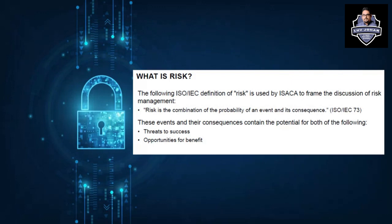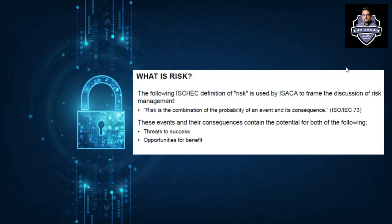Coming back to the definition: risk is the combination of probability and its consequences. Probability is the likelihood of occurrence of a risk, and consequence is the impact — reputational impact, business impact, financial impact, operational impact. I hope this gives you a clear and precise definition of risk. Please make sure you understand this, as it is a standard definition to use when answering any related questions.